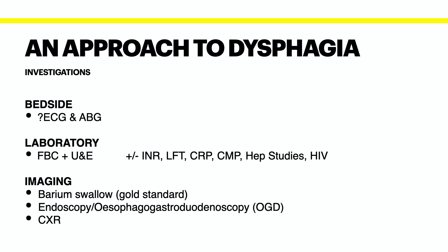In terms of laboratory investigations, you'll send away blood for an FBC to look for anemia or raised white cell counts in infection, as well as a urea and electrolytes to assess their dehydration from vomiting, and possibly assess their fitness for surgery and scopes.